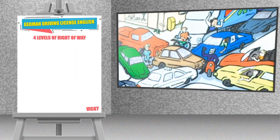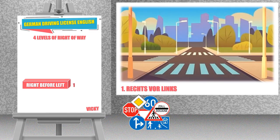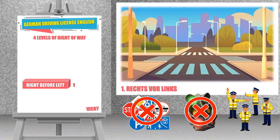Let's start with the simplest level: Rechts vor Links, the right before left rule. Whenever you approach a junction or a crossroad where there are no traffic signs, no traffic signals, and no traffic police controlling the traffic, the rule right before left applies. It says that vehicles coming from the right have priority and they are allowed to drive first. This rule is applicable at all crossroads and junctions where you see no traffic signs, no traffic signals, and no police officer regulating the traffic.